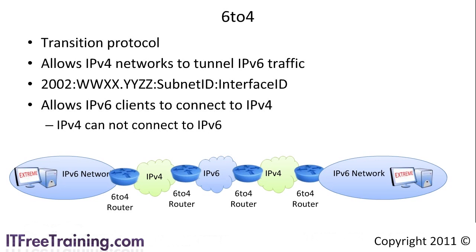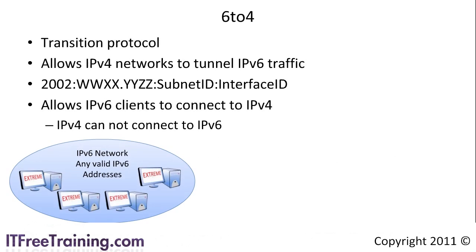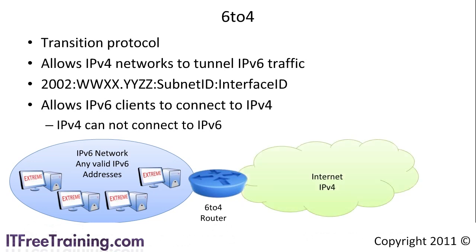Using 6to4 you could do the following: the computers on the IP version 6 network can have any valid IP version 6 address. The 6to4 router has one valid 6to4 IP address. Using this IP address, your network can communicate with any IP version 4 computer on the internet; however, they cannot connect to you. Using the 6to4 protocol you can start deploying your IP version 6 network and still keep accessing the IP version 4 network.